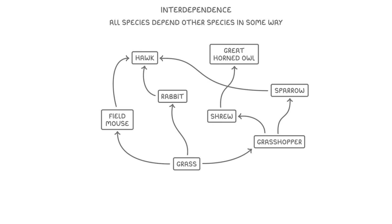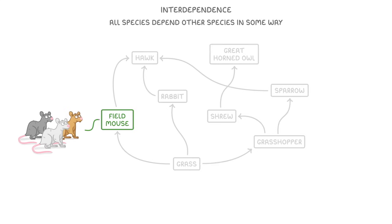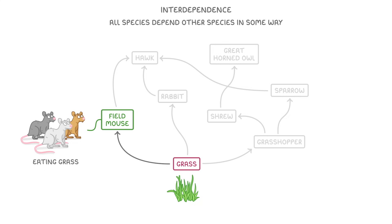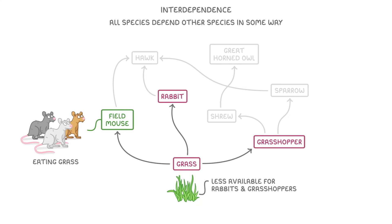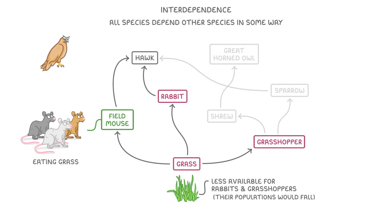The important thing to understand is that if anything happens to one of these species, it will affect all of the others. For example, think about what might happen if the mouse population suddenly increased. As all these mice need food, they'd start eating the grass, which would mean there was less grass available for the rabbits and grasshoppers, so their populations would fall. Meanwhile, the hawks would suddenly have a lot more mice to eat, so their population might increase.